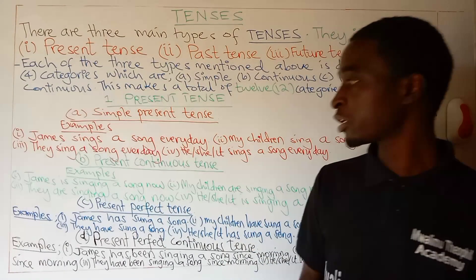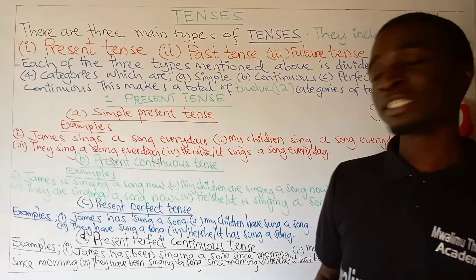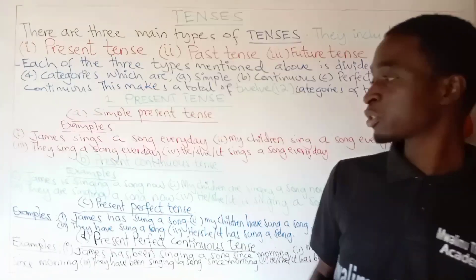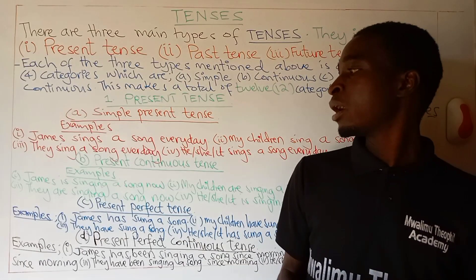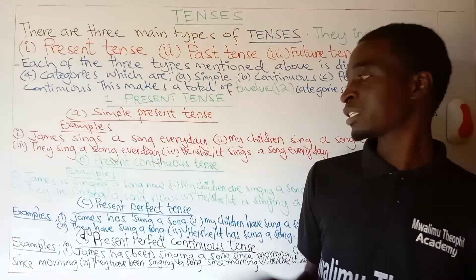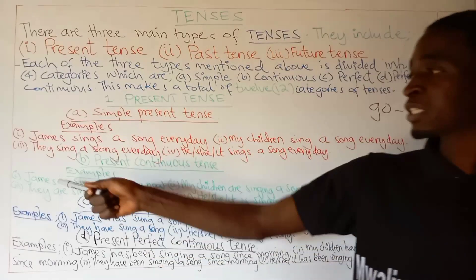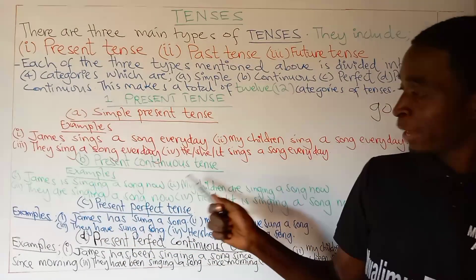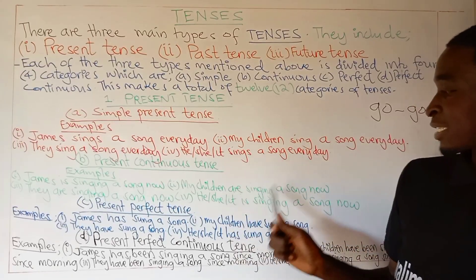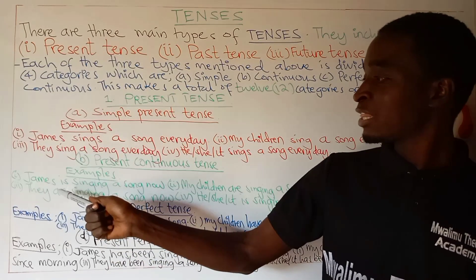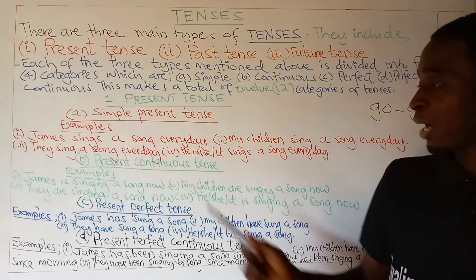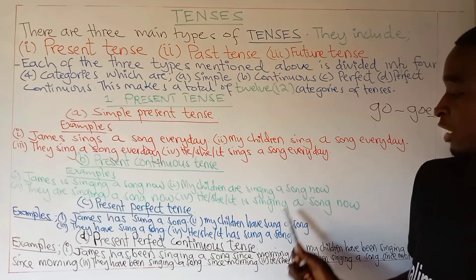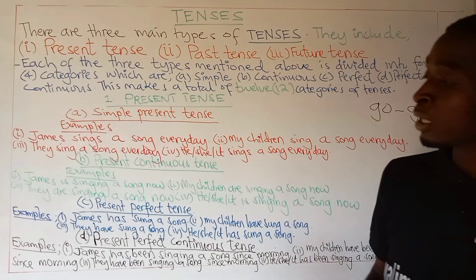After this first category, let us see the second category of present tense. This is present continuous tense. We have different examples of sentences which are in present continuous tense. The first example: James is singing a song now. Number two: my children are singing a song now. Number three: they are singing a song now. Number four: he or she or it is singing a song now.